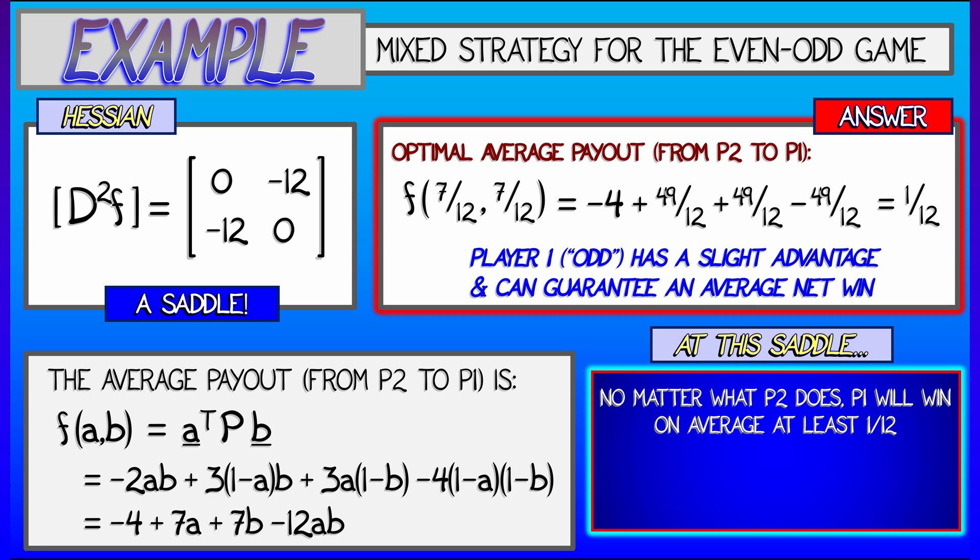So, at this saddle point, no matter what player two does, player one is going to win on average at least 1 twelfth. But, dually, no matter what player one does, player two can lose on average no more than 1 twelfth. Well, that doesn't seem like a very good deal for player two. Oh no, it is. As we shall see.